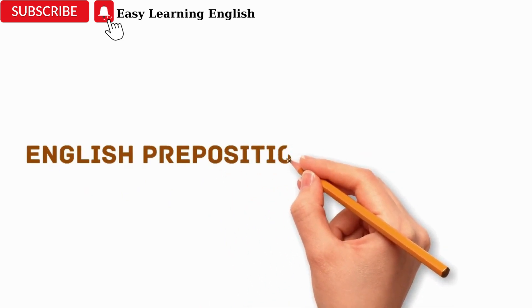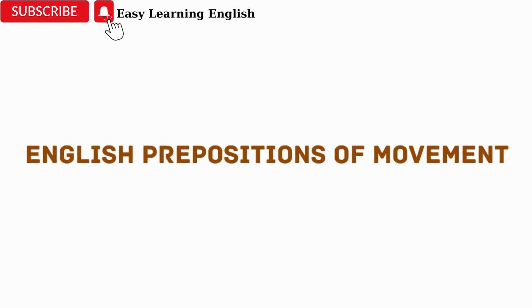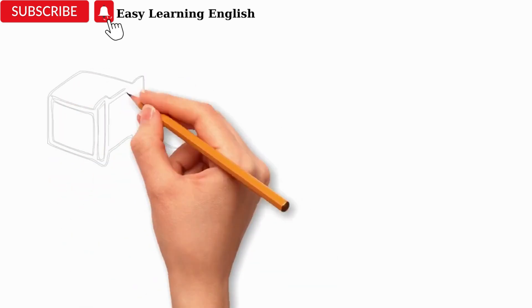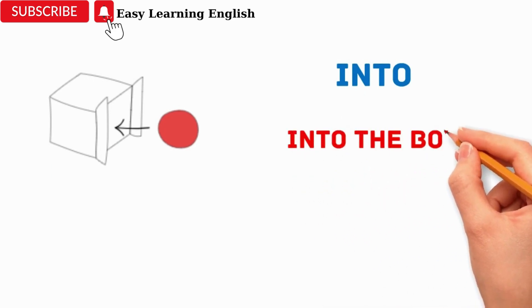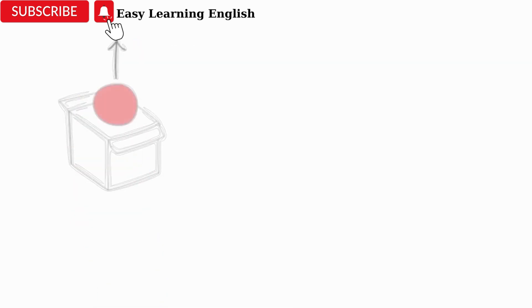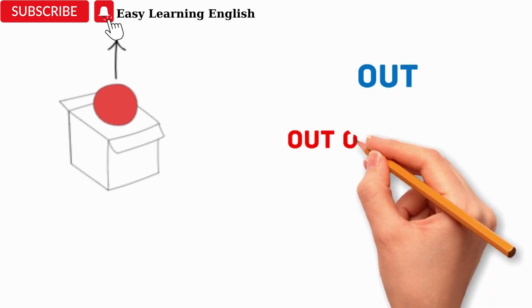English prepositions of movement. Into. Into the box. Out. Out of the box.